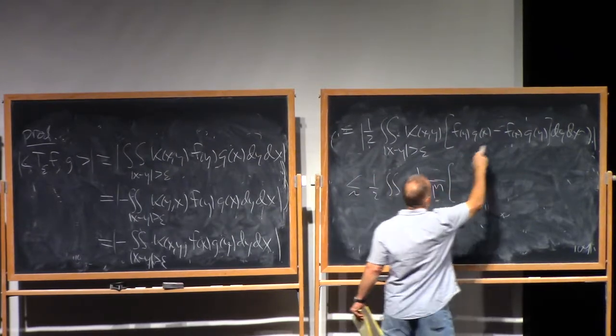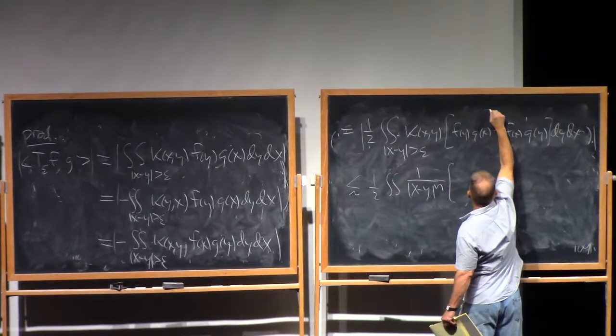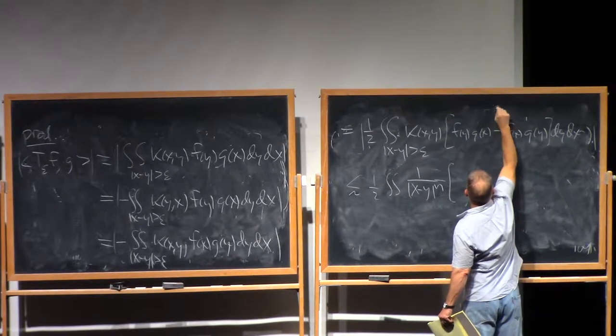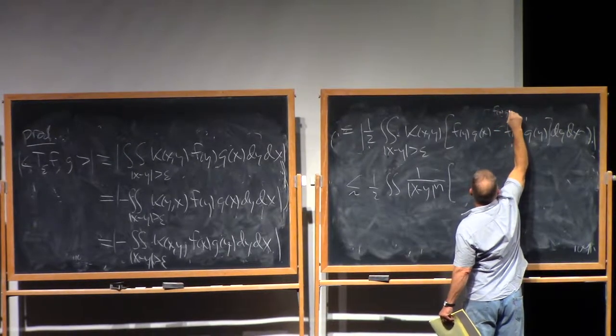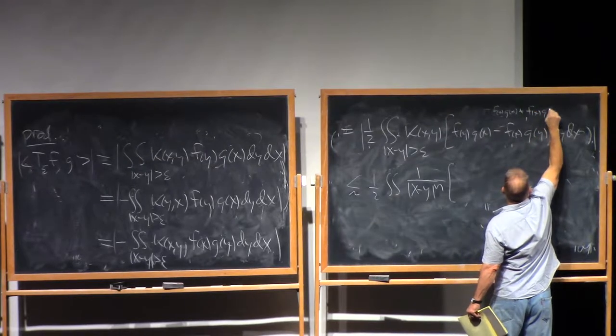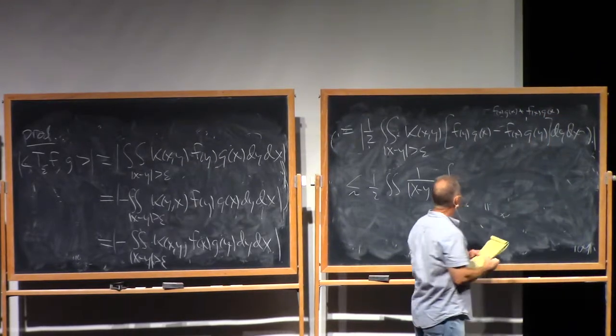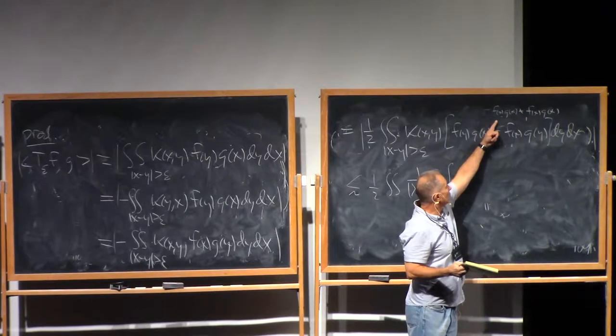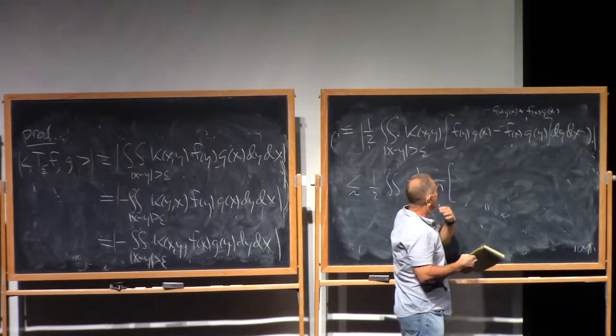And then here, I'm going to subtract off and add back in f of x times g of x. So this first pairing, what do I pick up?